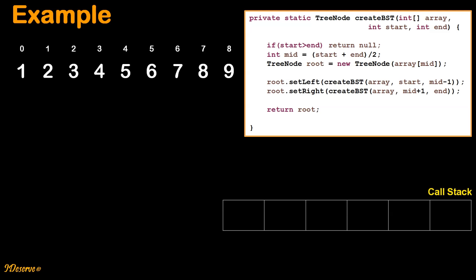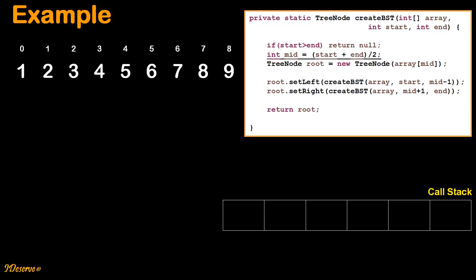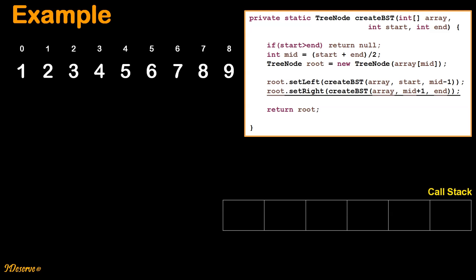First let's take a quick look at the code. This method takes three inputs: sorted array, start index, and end index of the array. If start index is greater than end index, we return null — this is the termination condition of the recursion. Otherwise we calculate mid as start plus n divided by 2, create a tree node root with the mid element, then recursively call the function for left and right sub-arrays to get the roots of the left and right subtrees. Finally we return root.